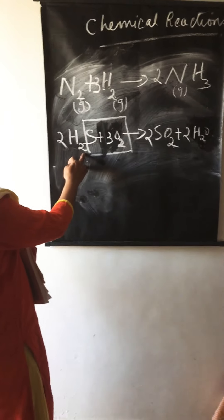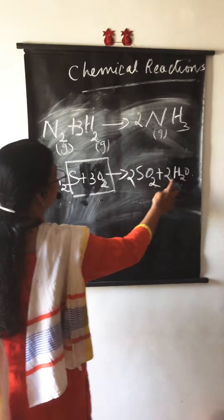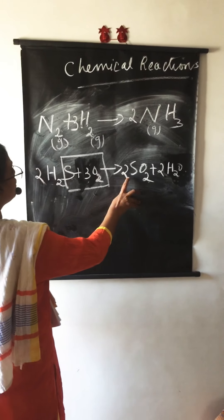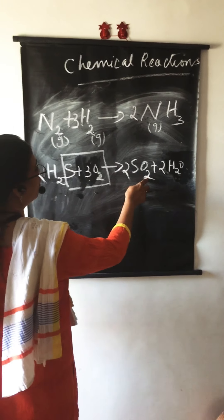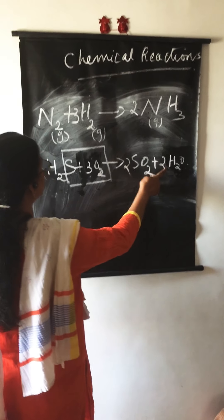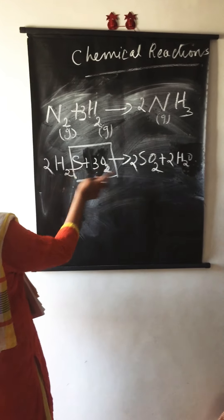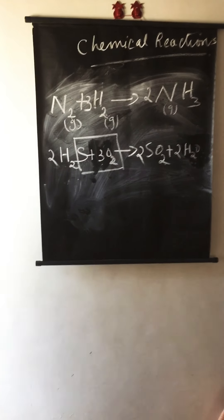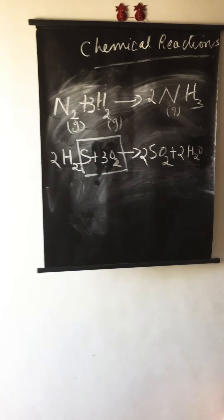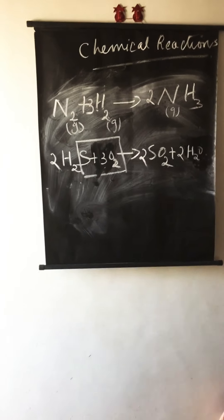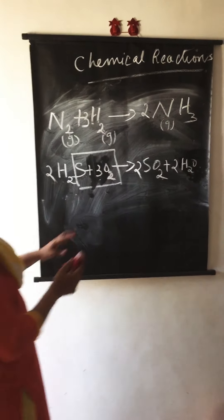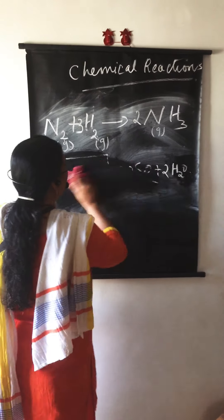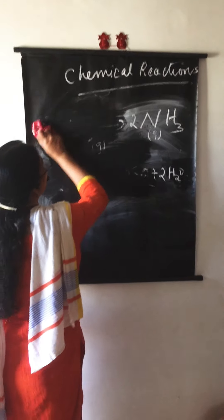The equation is balanced: 2×2 = 4 hydrogen on both sides, sulfur is 2 on both sides, and oxygen is 3×2 = 6 on both sides. This is how sometimes you have to use the trial and error method in order to balance the equation.